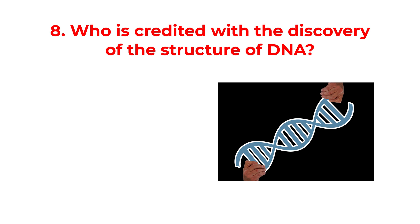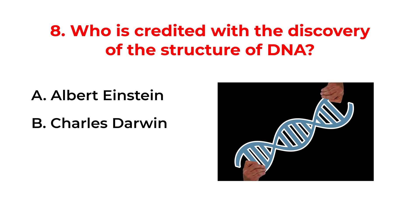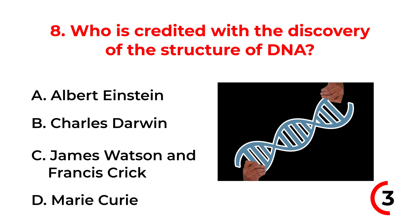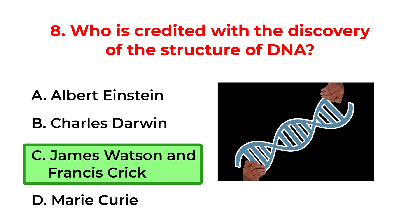Who is credited with the discovery of the structure of DNA? A. Albert Einstein. B. Charles Darwin. C. James Watson and Francis Crick. D. Marie Curie. The correct answer is option C: James Watson and Francis Crick.